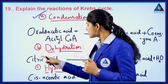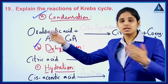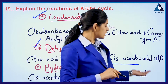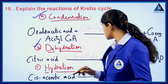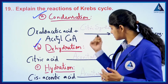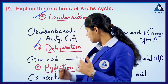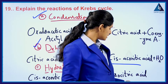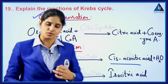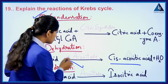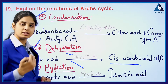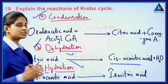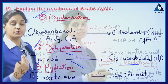This citric acid under the process of dehydration gets converted into cis-aconitate, and cis-aconitate again converts into isocitric acid by the same enzyme aconitase in both the reactions of dehydration and hydration. These are the first three steps of the Krebs cycle.